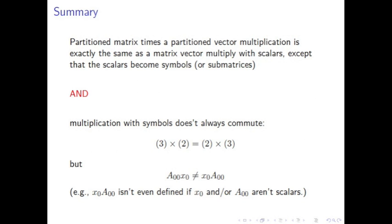To summarize: performing a partitioned matrix times a partitioned vector works exactly the same way as a matrix-vector multiply with scalars, except that the scalars become submatrices or symbols representing submatrices, and multiplication with the submatrices and vectors doesn't always commute.